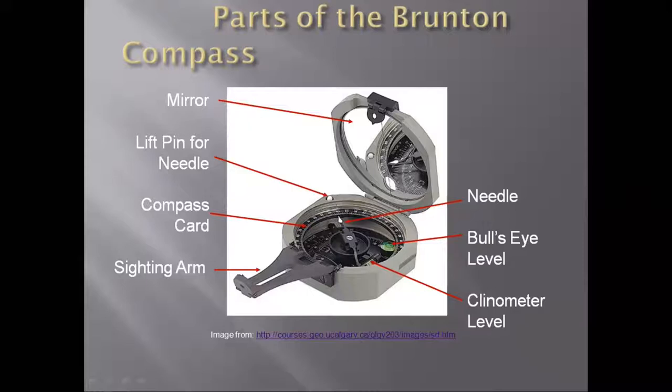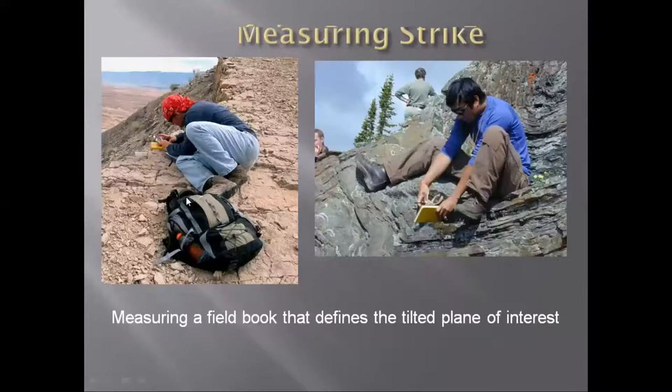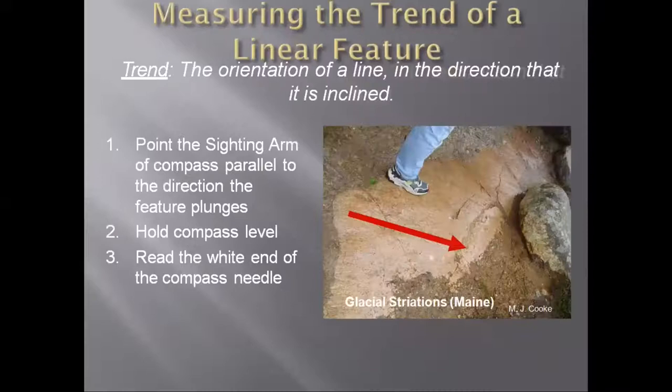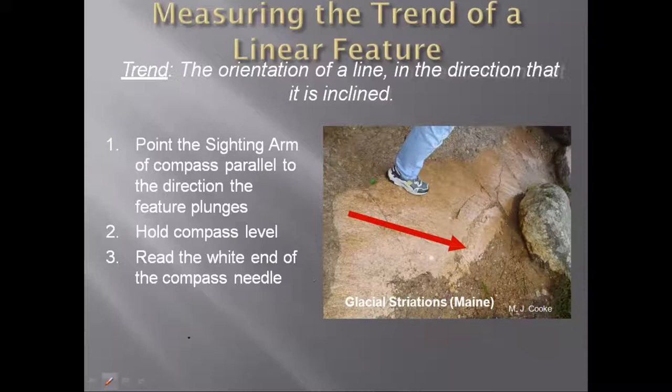Similarly, plunge and trend are also paired measurements, just like these two. There are some features that are linear features — we discussed about the striations, just like some of these features here. These are different lines that are present and they indicate the movement of a glacier.